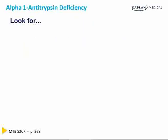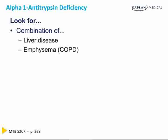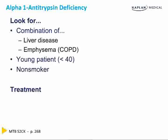Alpha-1 antitrypsin deficiency is a defect in the production of alpha-1 antitrypsin. Look for a combination of liver disease and emphysema in a patient who is young and a non-smoker. Treatment is to replace the enzyme exogenously.